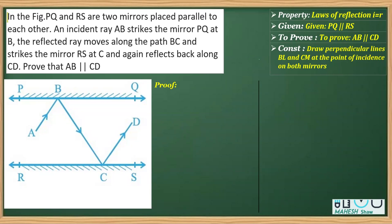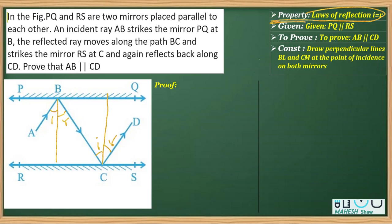In this video, I am going to do one question based on the chapter Lines and Angles, and this in particular is based on the property of laws of reflection. The laws of reflection says that the angle of incidence — that is the angle made with the incident ray and the normal — is equal to the angle of reflection. This is the property on which this question is based, so here are these two angles: angle of incidence is equal to angle of reflection, which you might have studied in the chapter physics.